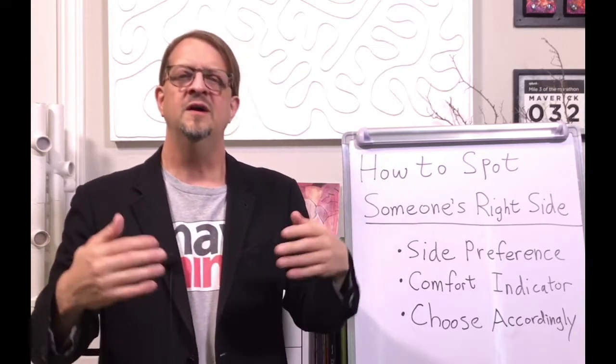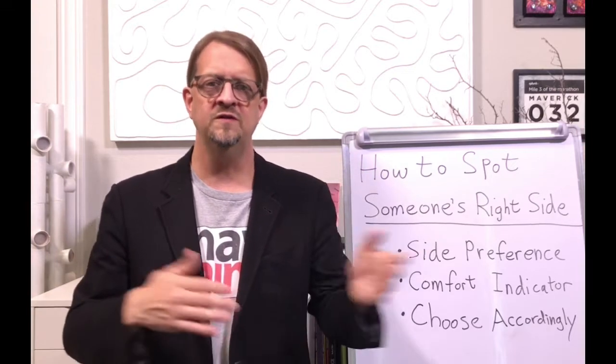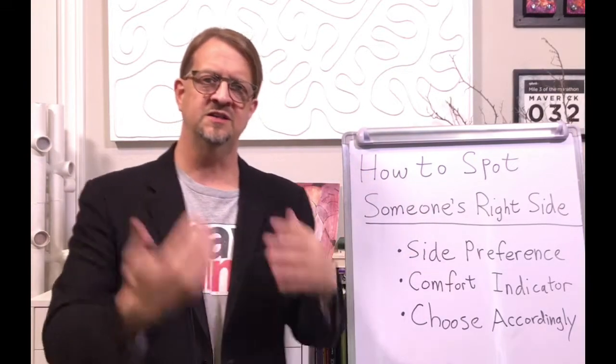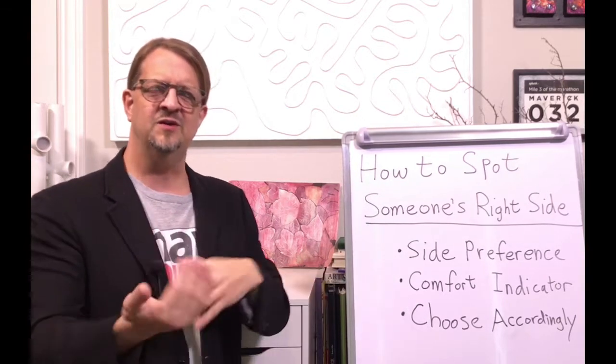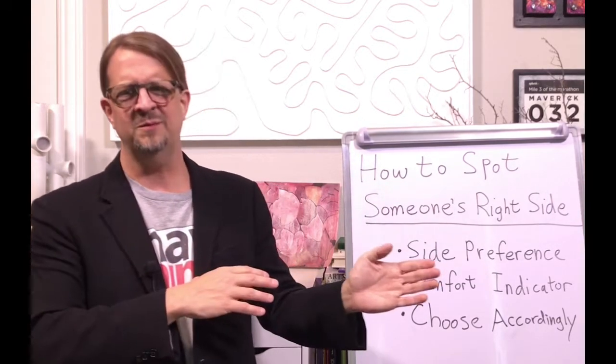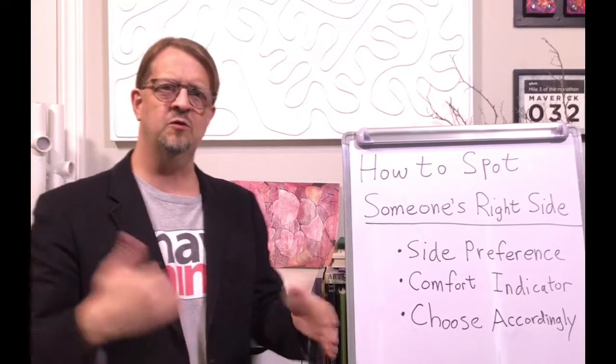You can tailor your communication to be congruent and send the right kind of message because you can use that right side or that wrong side to deliver the message. Because it's really like a comfort indicator. They're comfortable with you on one side, uncomfortable with you on the other side, and you can choose accordingly based on the message you want to give.